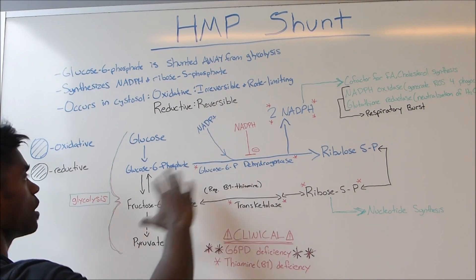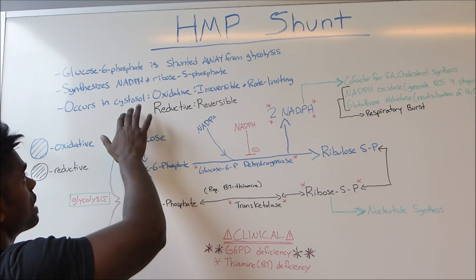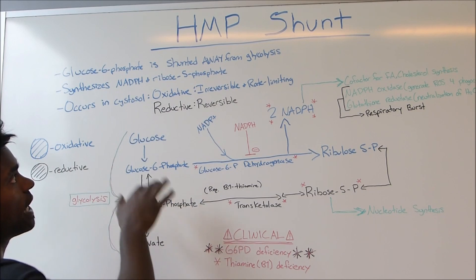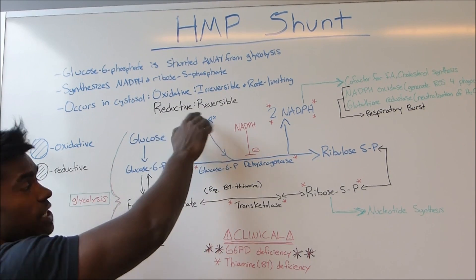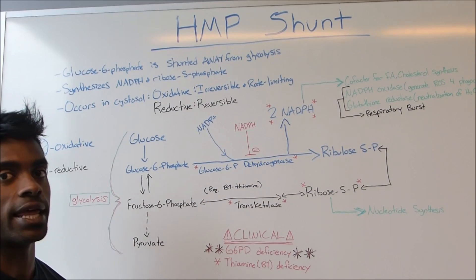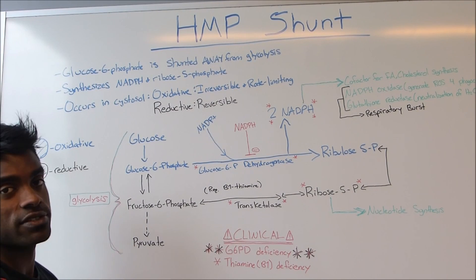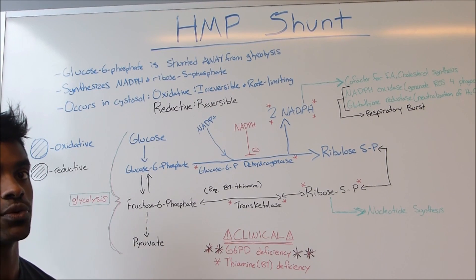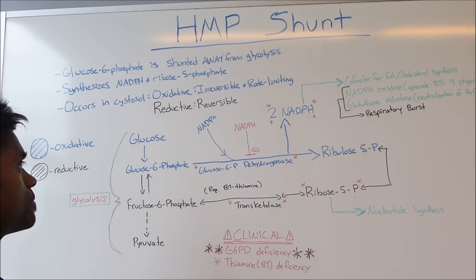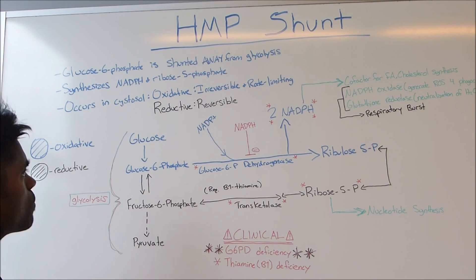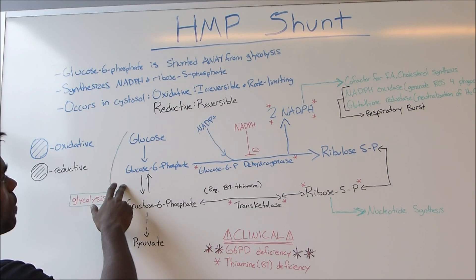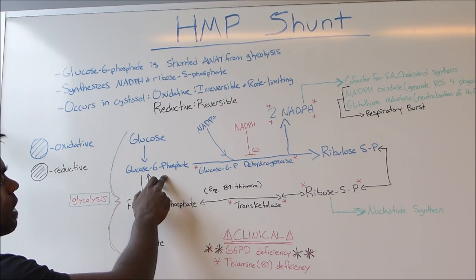All of this occurs within the cytosol and it can be broken down into two components: the oxidative phase, which is irreversible and rate-limiting, and then the reductive phase, which is reversible. Now when we look at the pathway, the first thing we can start with is the oxidative pathway.